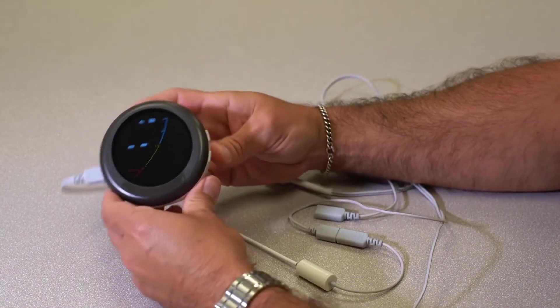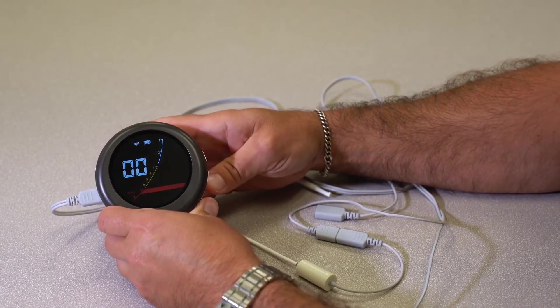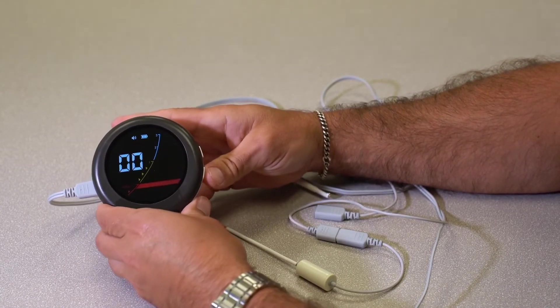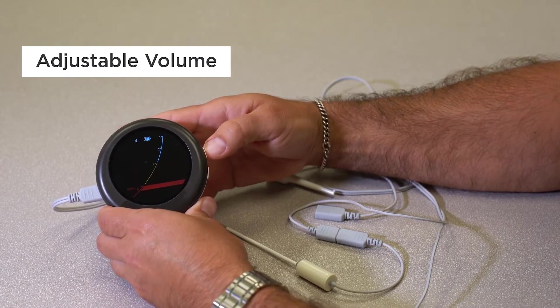A couple other little things to know about the apex locator. There's a settings button on the side here. What this will do is make sure that you're measuring to your working length, but then I can also come in here and adjust my volume. So I can turn the volume off, I can turn it up.